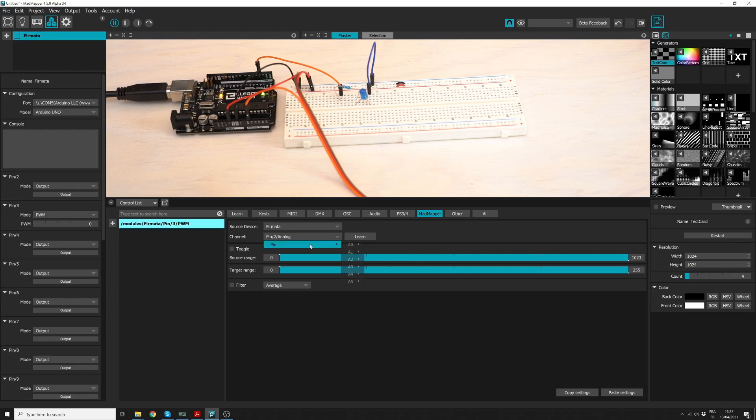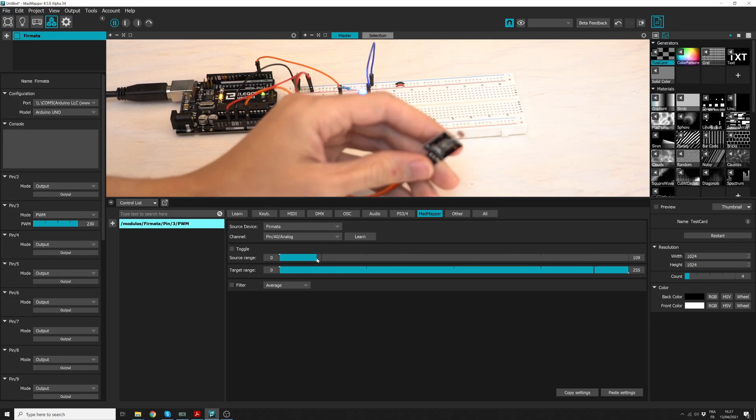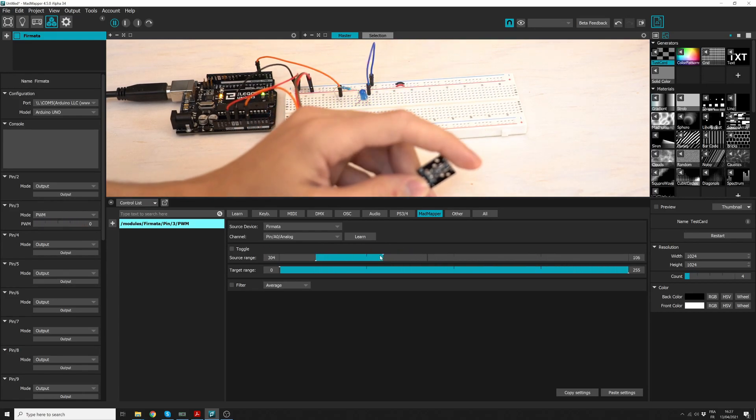Select the pin attached to the light sensor, here A0. Then remap the ranges in order to switch off the LED when covering the light sensor.